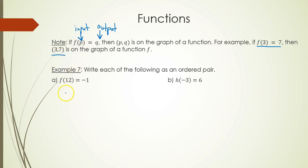So for instance, example 7: write each of the following as an ordered pair. Part A: f(12) = -1. This means that your input is 12 and your output is -1. The ordered pair would be (12, -1). That is all.